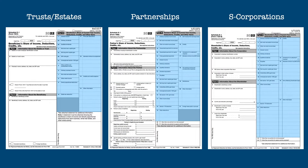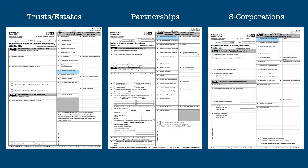Part 3 is the part we're most interested in. This part contains the recipient's share of any income, deductions, or credits that might affect the recipient's tax liability. Many of these items are the same from schedule to schedule, such as interest, dividends, capital gains, and ordinary business income. And some entries are unique to each schedule, such as the estate tax deduction and final year deductions on the estate and trust K-1, or guaranteed payments and self-employment earnings on the partnership K-1.